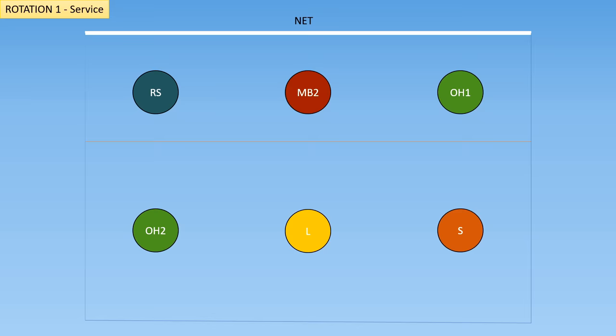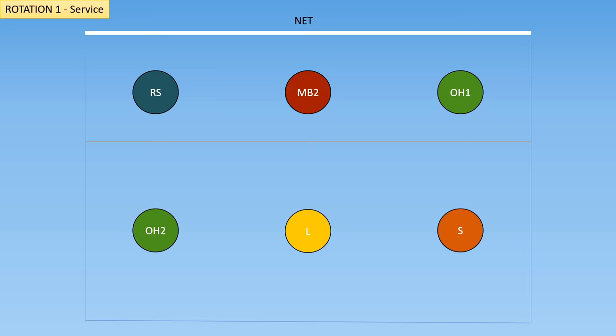Now let's look at the first rotation. We have the serve, so the setter is going to get back and ready to serve. You're going to notice that the players in the front are going to bunch up in the middle here. This is because the right-sided hitter's base position is in the front right, and the outside hitter's base position is in the front left, and this is the quickest way for them to get to those positions without breaking the rules of rotation.